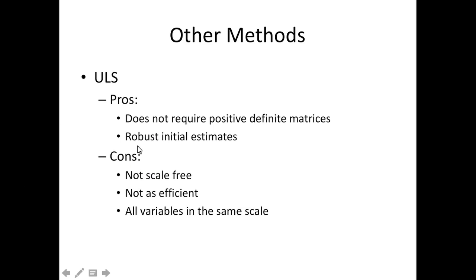Sometimes with very high correlated data, that's a problem that you have. And it does create you robust initial estimates. Robust meaning that they're pretty, they're likely to be the same over and over again. The cons of unweighted least squares, it is not scale-free. So if you transform the data, you will get a different solution. It is not quite as efficient as maximum likelihood, and all of your variables should be in the same scale. So if you have age and income, you got to fix one of them.